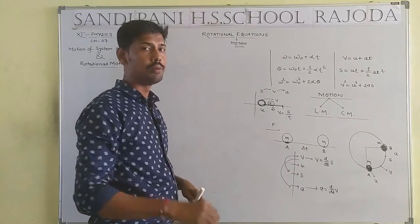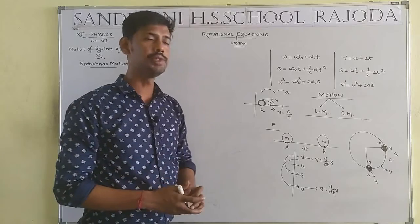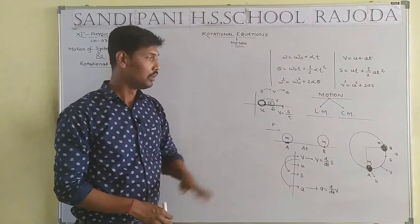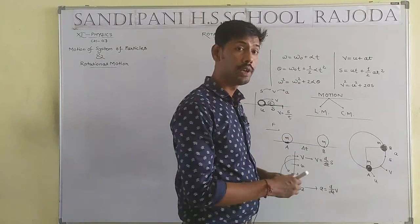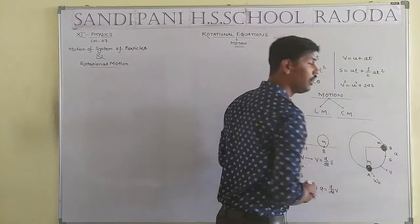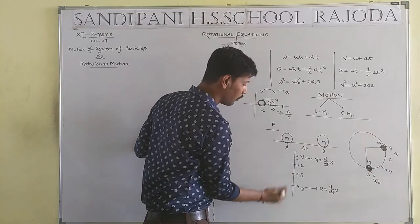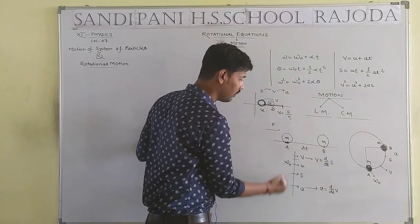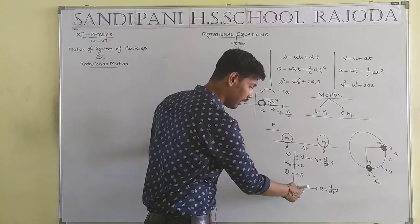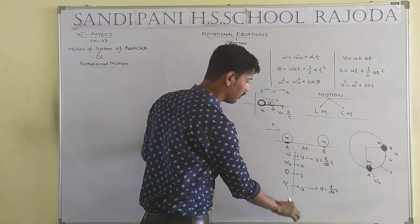In rotational motion, we get a new word: angular. In linear motion we said velocity, but in circular motion we say angular velocity. Angular initial velocity is represented by omega naught (ω₀), final velocity by omega (ω), displacement by theta (θ), and angular acceleration by alpha (α).